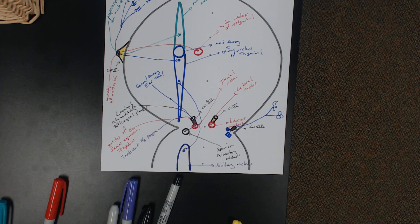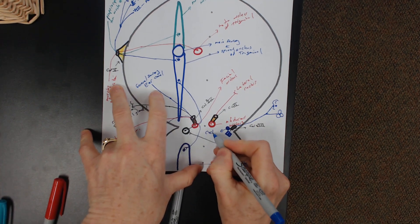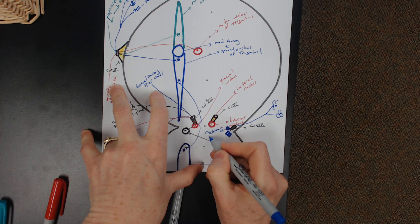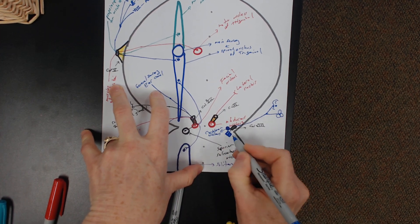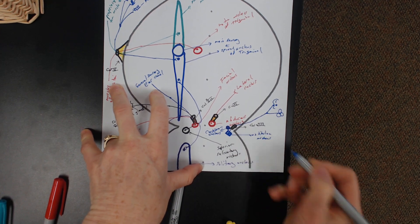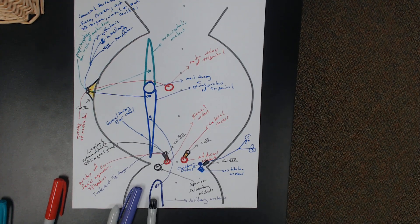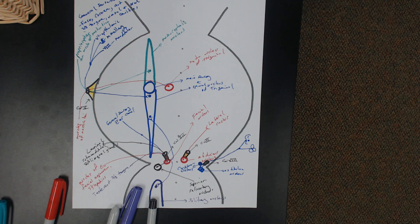This is your cochlear nucleus and this is your vestibular nucleus. Those are all cranial nerve nuclei in the pons — five, six, seven, and eight — and those are the nuclei that those cranial nerves use to carry out their functions. The different colors are there because they're using different nuclei.